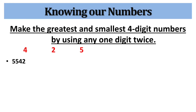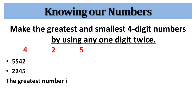Here the greatest digit is 5 and the smallest digit is 2. For the smallest number, write the smallest digit twice and the remaining digits in ascending order, giving us 2245. Thus the smallest number is 2245.